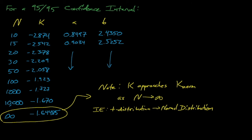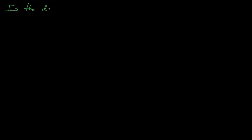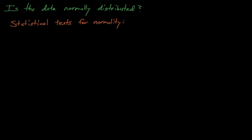This method can reliably produce 95-95 confidence intervals if our data follows a normal distribution, but how can we know if our k-effectives and c over e's are normally distributed? Thankfully, there are several statistical tests that help us check whether a set of data follows a normal distribution. These tests include the Kolmogorov-Smirnov test, the Shapiro-Wilkes test, and the Anderson-Darling test.